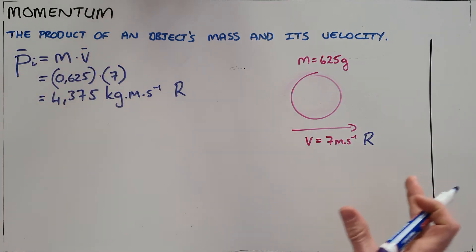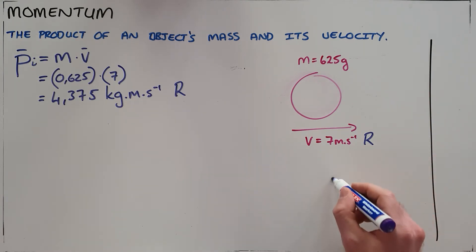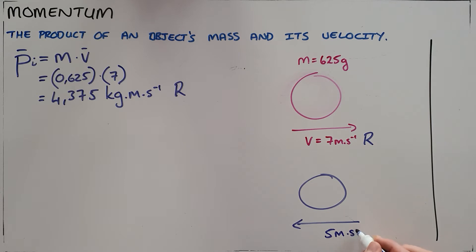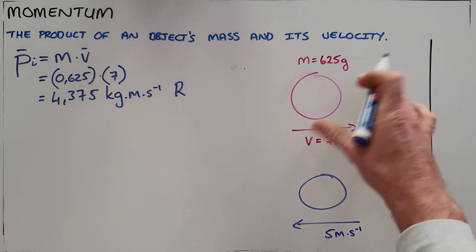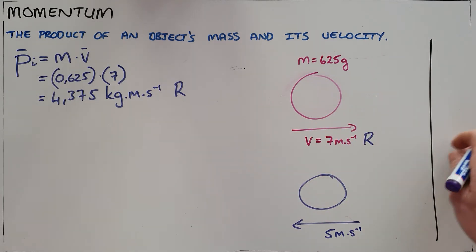This is the momentum before anything happens. As we can see, this object here is going to strike the wall and then bounce away from the wall. In this example, I'm going to say that it bounces back at 5 meters per second. Obviously, some energy is going to be lost to the wall as it strikes it and bounces back.